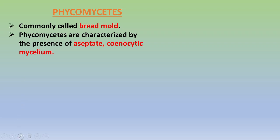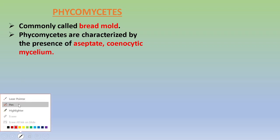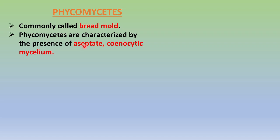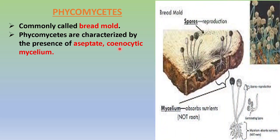Aseptate means there are no septations or separation walls between the cells; all the nuclei are present within the same mass of cytoplasm or protoplasm. Here you can see a picture of a bread piece upon which the fungus is growing. These are the hyphae which are growing upon the bread piece.